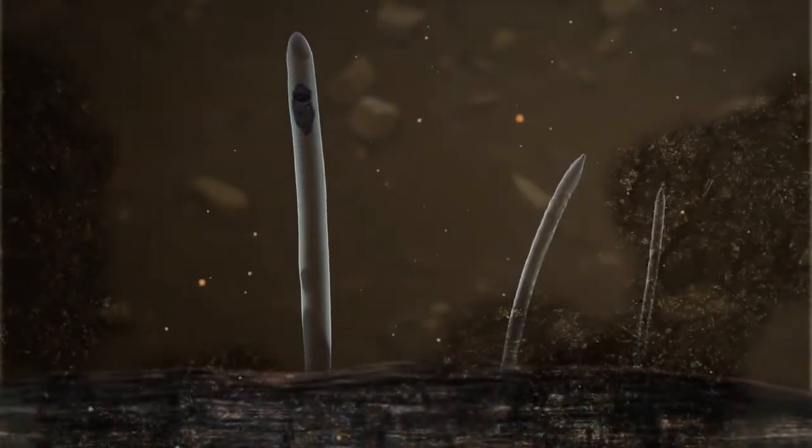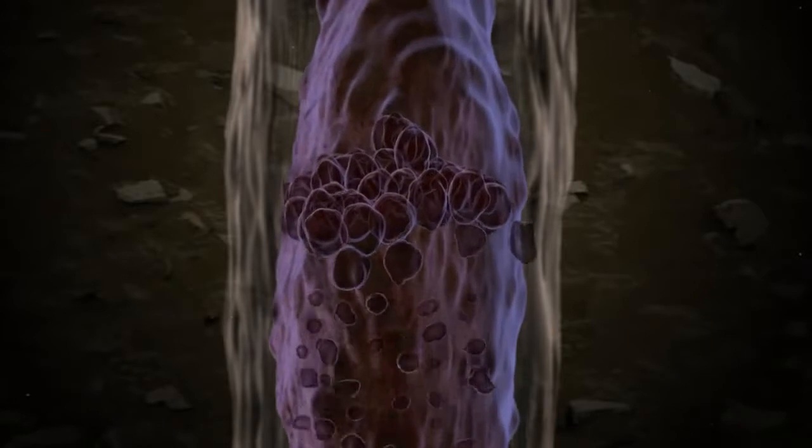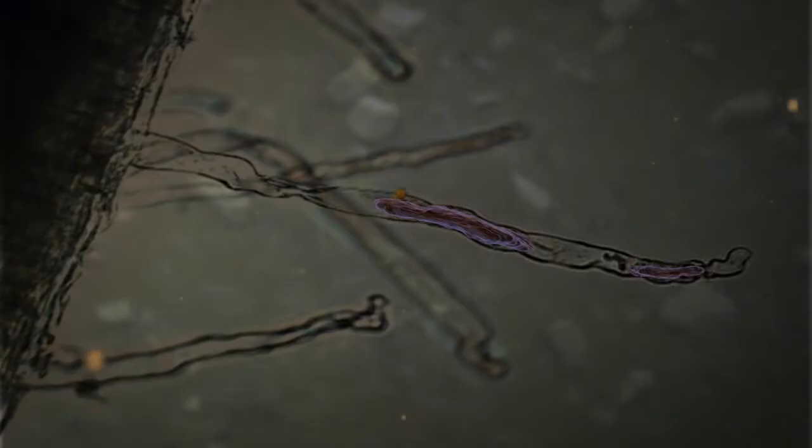Once inside a root hair, the zoospore develops into an amoeba-like structure called a plasmodium. The plasmodium grows rapidly and matures within a few days, and then produces new zoospores that are released back into the soil environment.